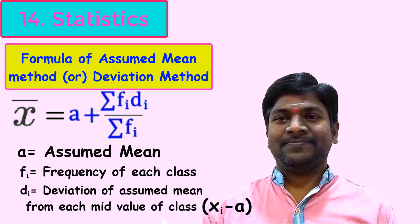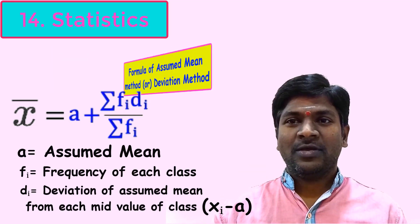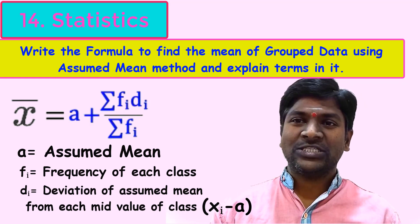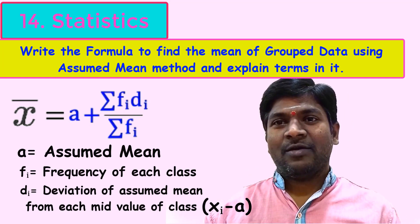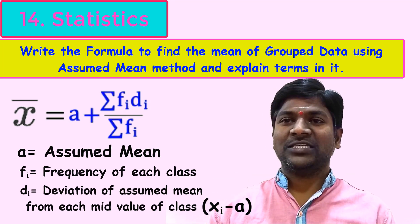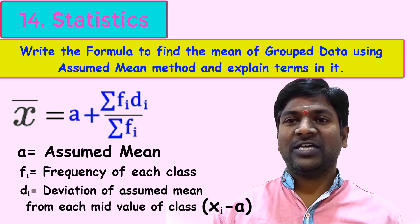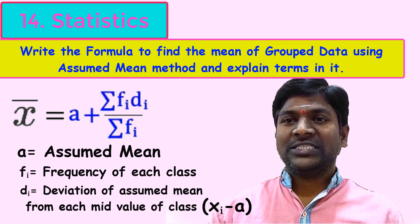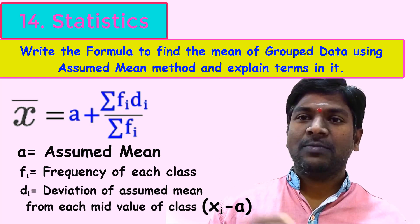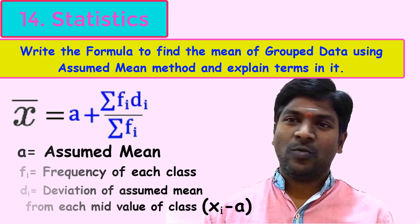This is a common two-mark exam question: write the formula to find the mean of classified data using the assumed mean method and explain the terms in it. The answer is: mean x̄ = a + (Σf_i d_i) / Σf_i, where 'a' means assumed mean, 'f_i' means frequency of the classes, 'd_i' means deviation from each mid value (d_i = x_i − a), and Σf_i means number of observations or sum of frequencies.